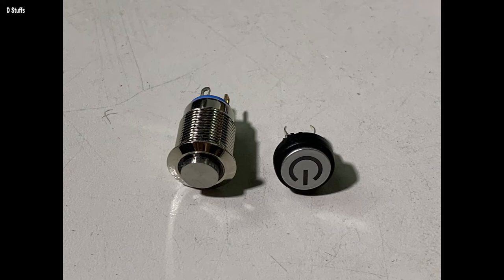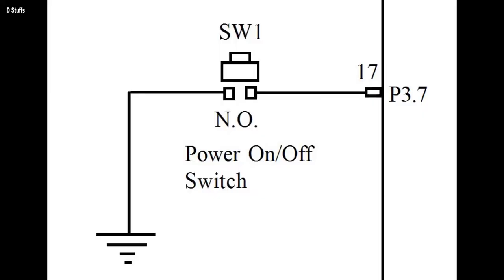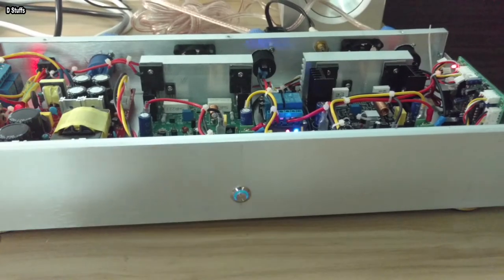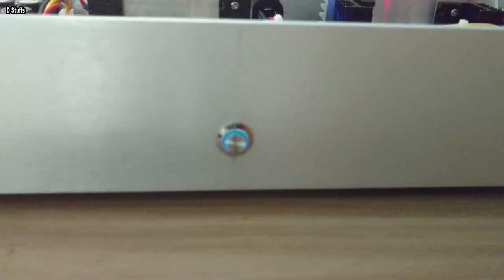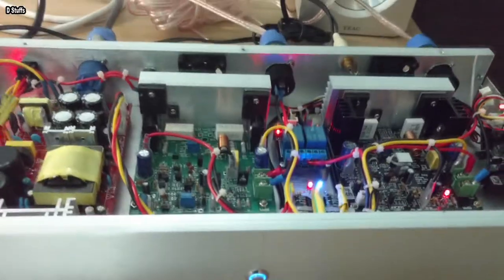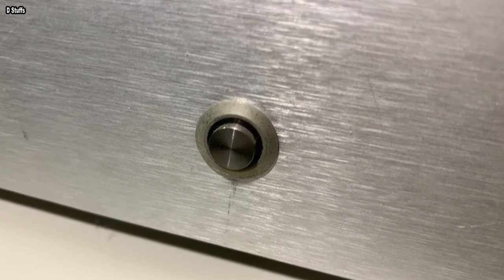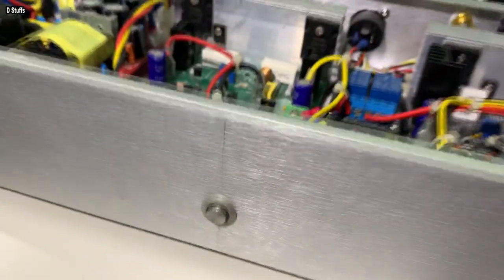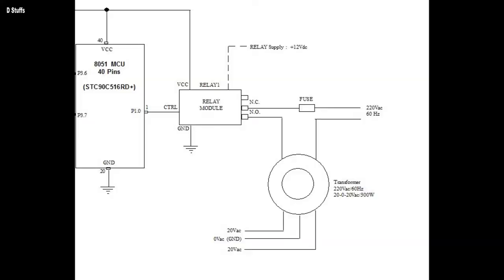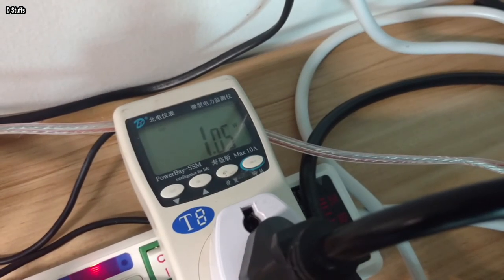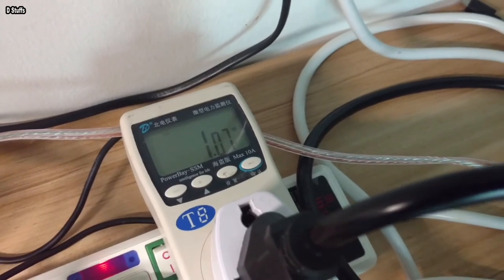Ang SW1 iyan ang power on/off switch natin sa amplifier — yung pipindutin kung gusto nating patayin ang amplifier. I-imagine natin na ang push button at yung relay ay pang-control natin ng 220 volt AC ng power amplifier natin.